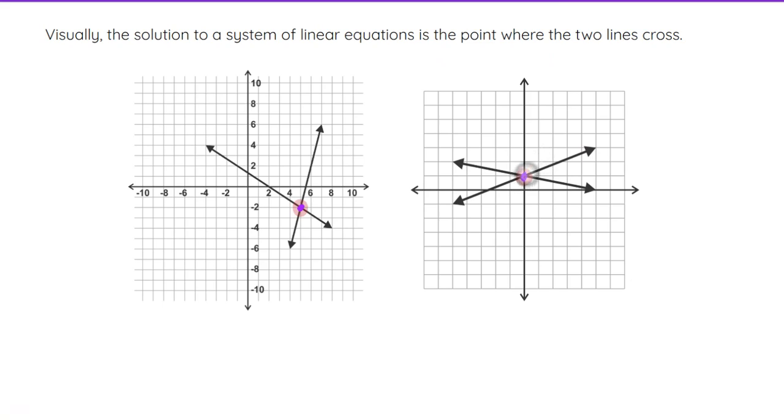So the point where those two lines cross is going to be the solution of the system, and that is the point that you are finding when you solve algebraically with substitution or elimination.